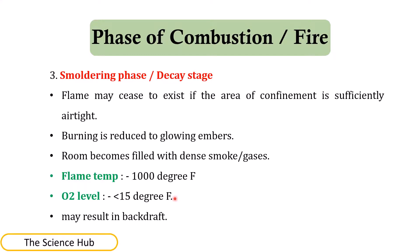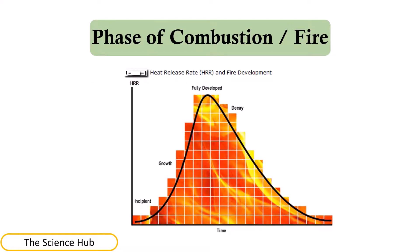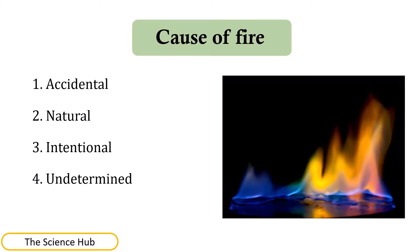The smoldering phase may result in a backdraft. The cause of fire can be accidental, natural, intentional, or undetermined. Here you can see the phase of combustion heat release rate and fire development from initial stage through growth, fully developed, and then decay.